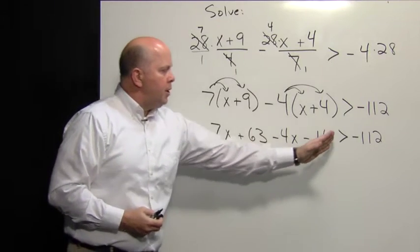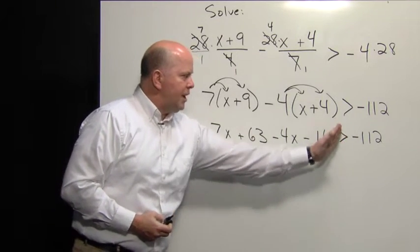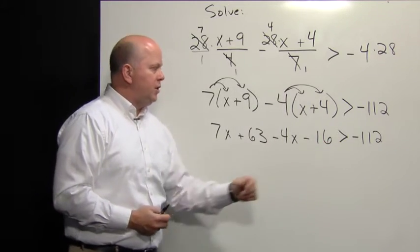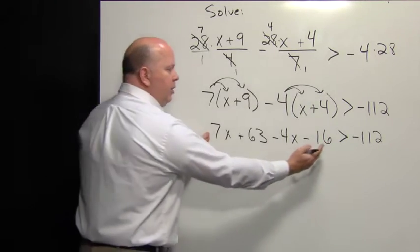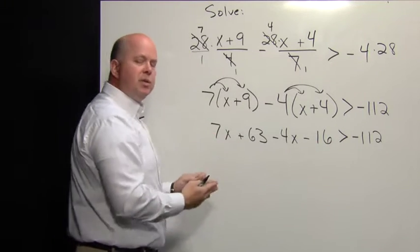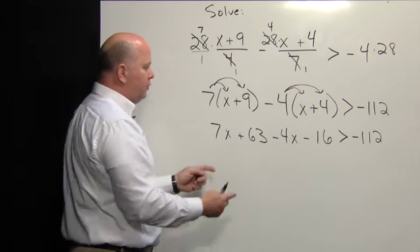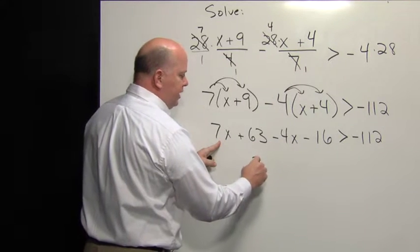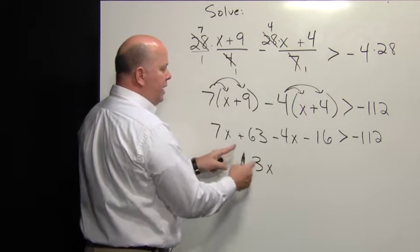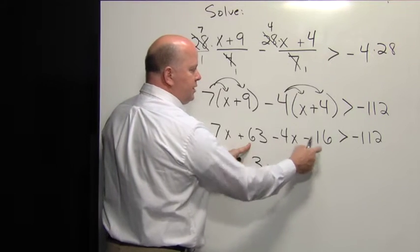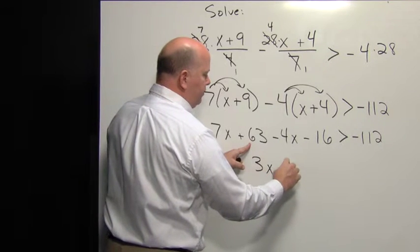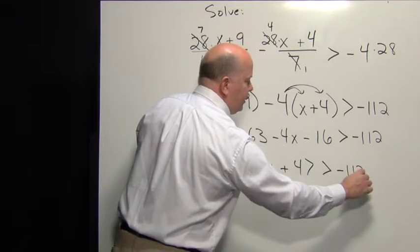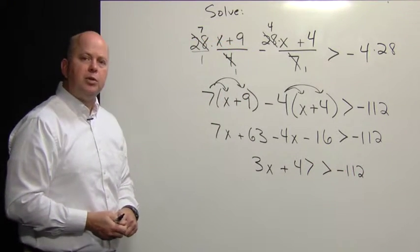This inequality has an imaginary line dividing both sides, like an equal sign, and because all of these terms are on the same side, we simply combine them. Combining 7x minus 4x gives us 3x. And 63 minus 16 gives us plus 47. This is going to be greater than negative 112.